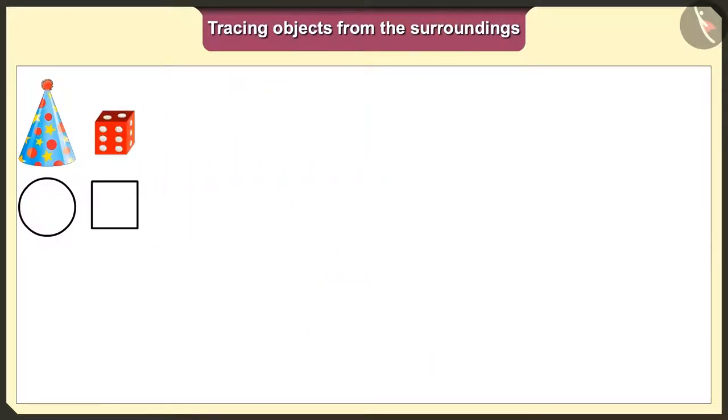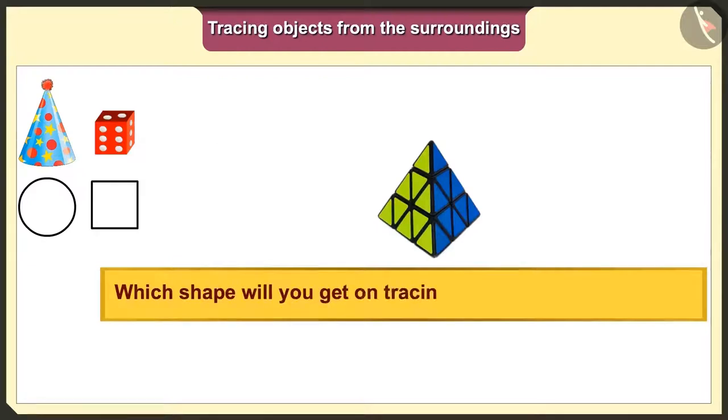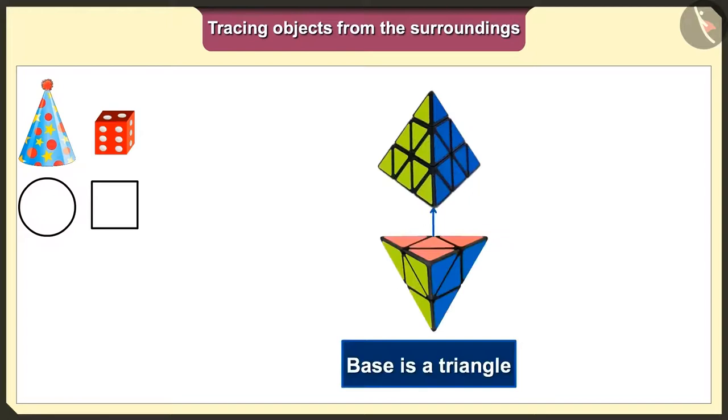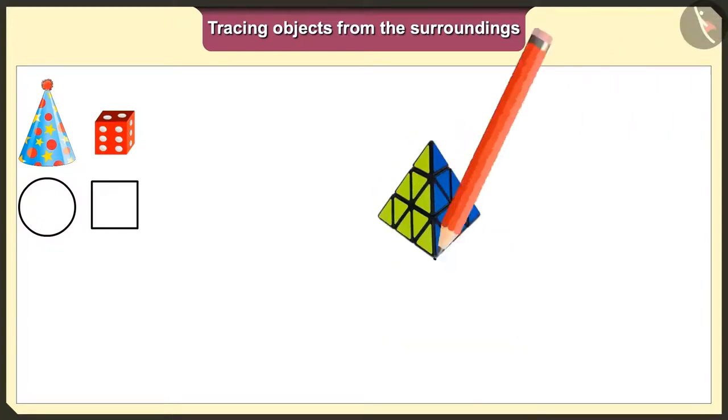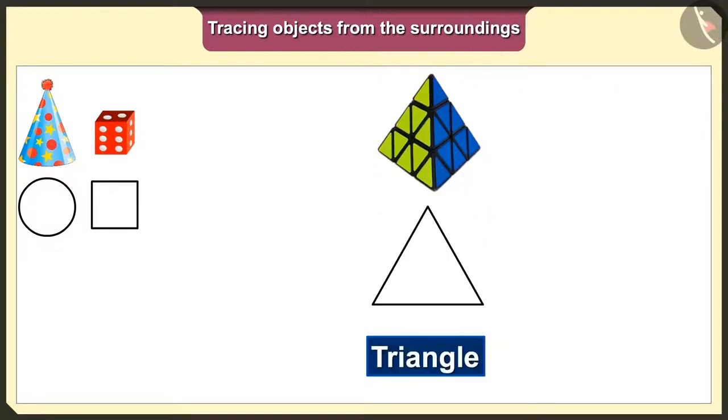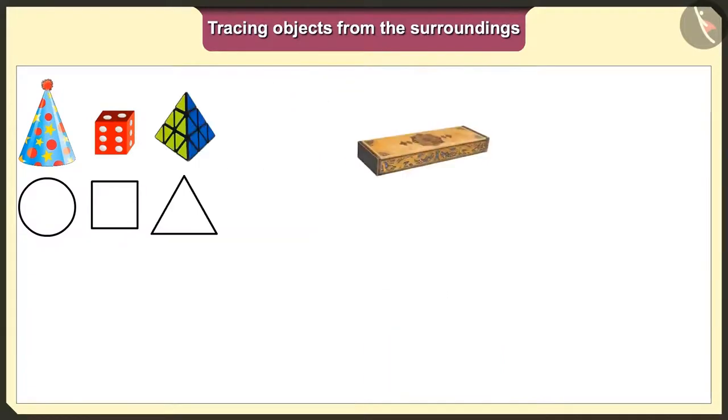Now, let's see which shape we would get when we trace this pyramid shaped toy. The base of this toy is a triangle. So, we will get triangle shape when we trace it.